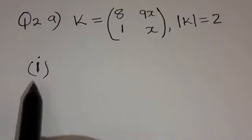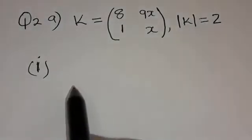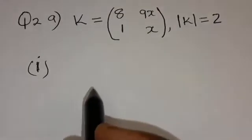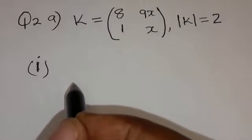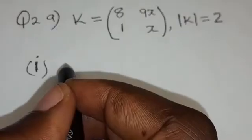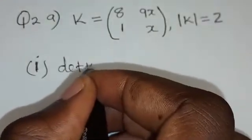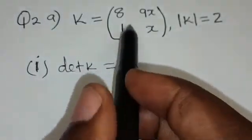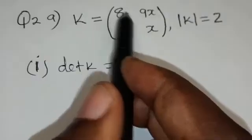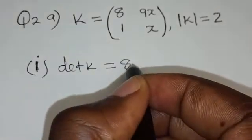The first thing they want us to find is the value of X if the determinant of this matrix is 2. To find the value of X, we're going to use the formula for finding the determinant of a 2 by 2 matrix. So the determinant of matrix K equals — you multiply the major diagonal elements, 8 times X.